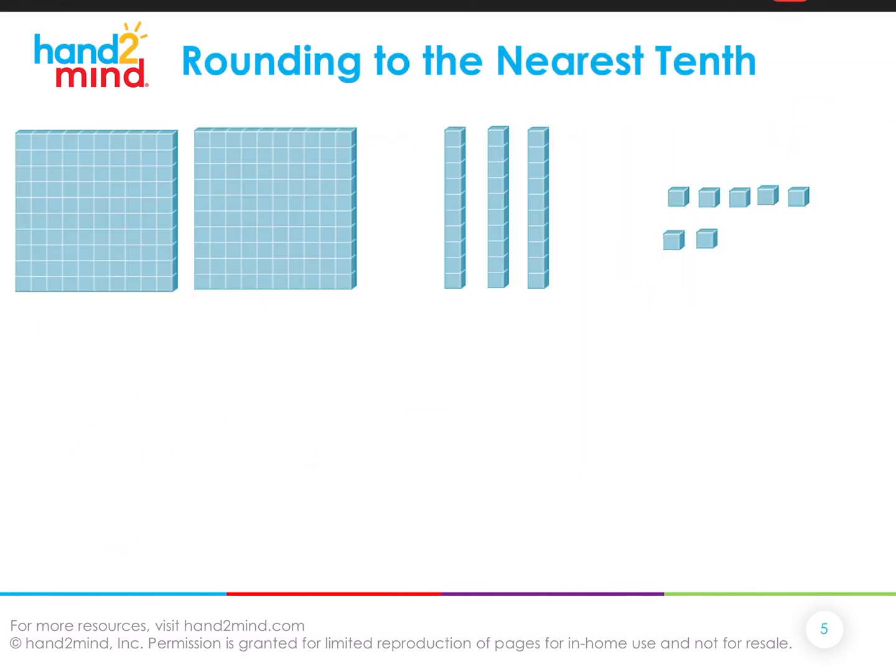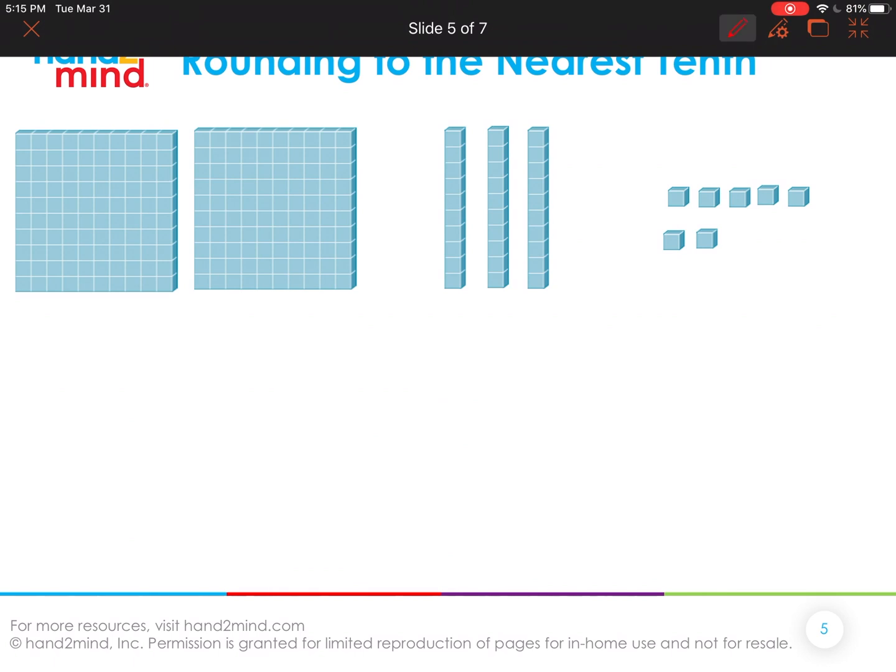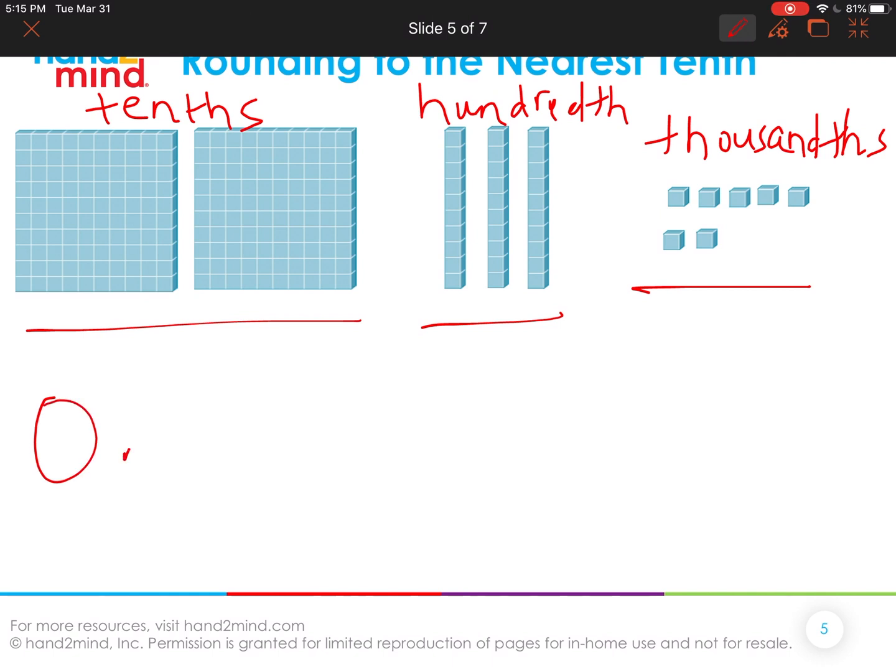Okay. So let's practice. So we have our number. Remember that our flats are our tenths. These are our tenths. Our rods are our hundredths. And our units are our thousandths. So what number do we have represented here? Can you tell the person next to you what number do we have represented here?